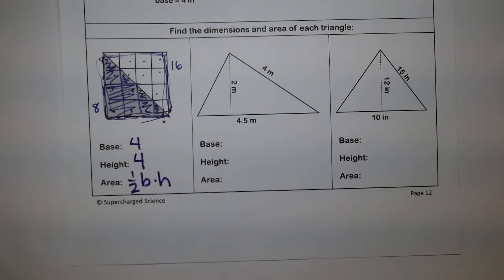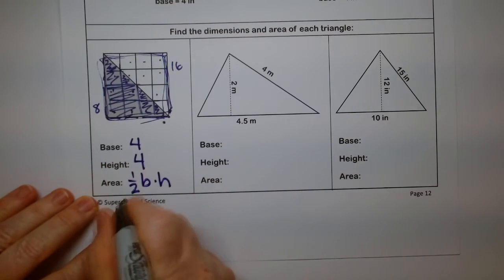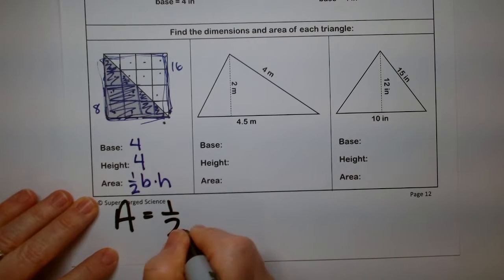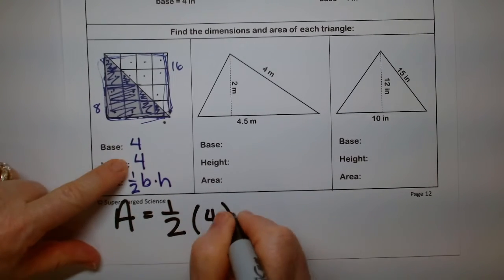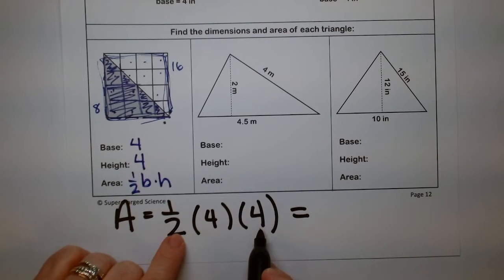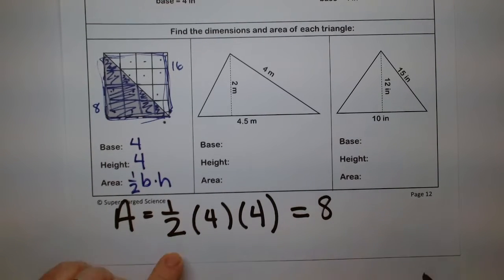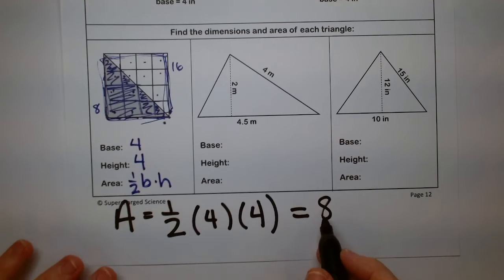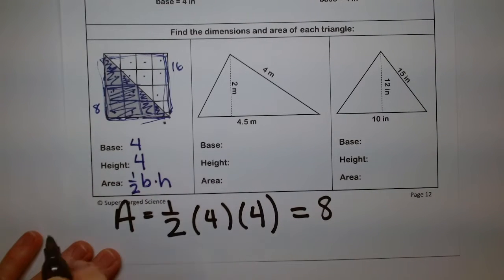And so if we were to write this out nice and big, the area is 1 half, the base is 4, the height is 4. 4 times 4 is 16, divided by 2 is 8. And that is my area. This is 8 square units, whatever they happen to be.